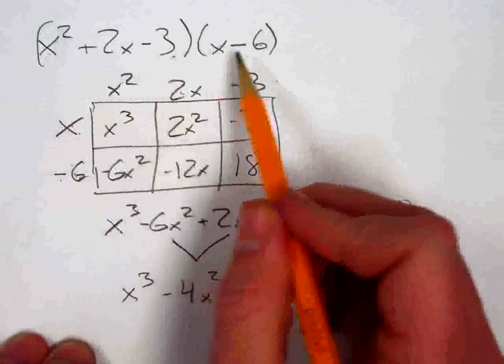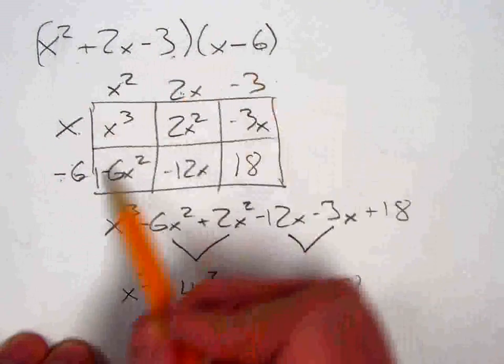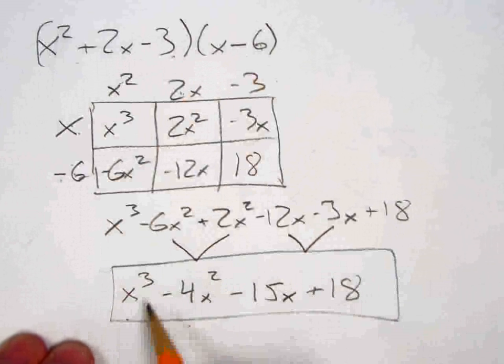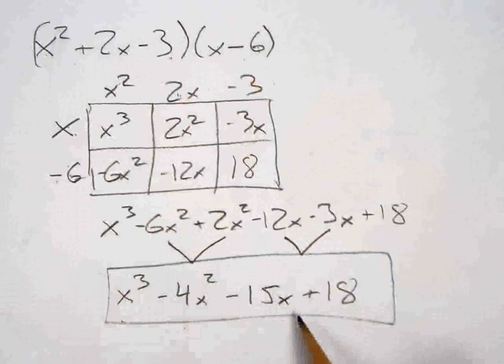So to summarize, when I multiply that trinomial times that binomial using the box method, I'd end up with the product after I simplify of x cubed minus 4x squared minus 15x plus 18.